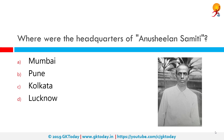Where were the headquarters of Anushilan Samiti? The correct answer is Kolkata. Anushilan Samiti was a Bengali Indian organization that existed in the first quarter of the 20th century and propounded revolutionary violence as the means for ending British rule in India. The organization arose from a conglomeration of local youth groups and gyms in Bengal in 1902.